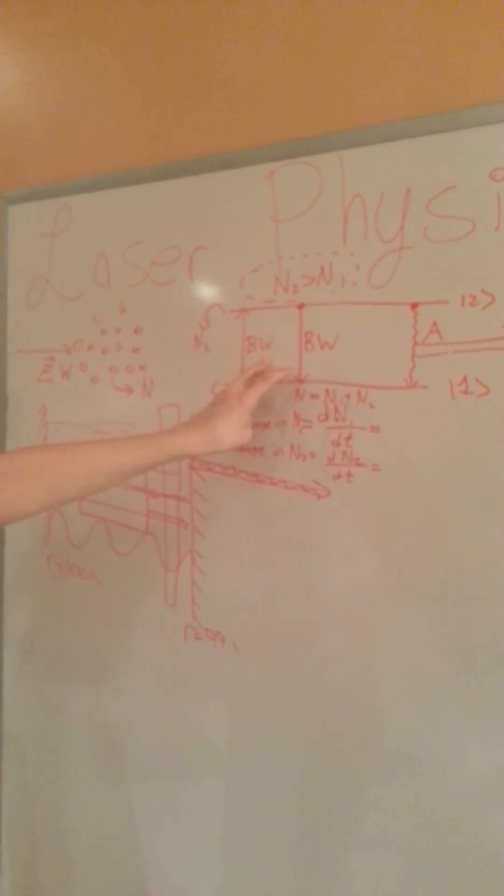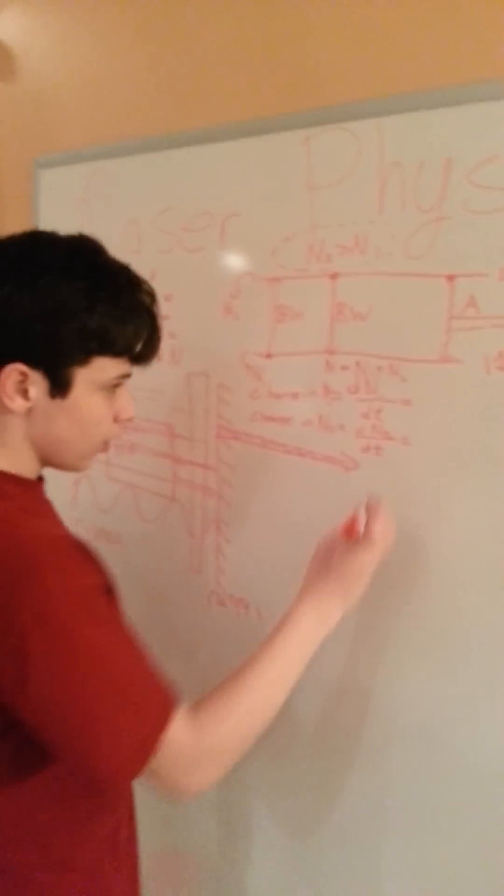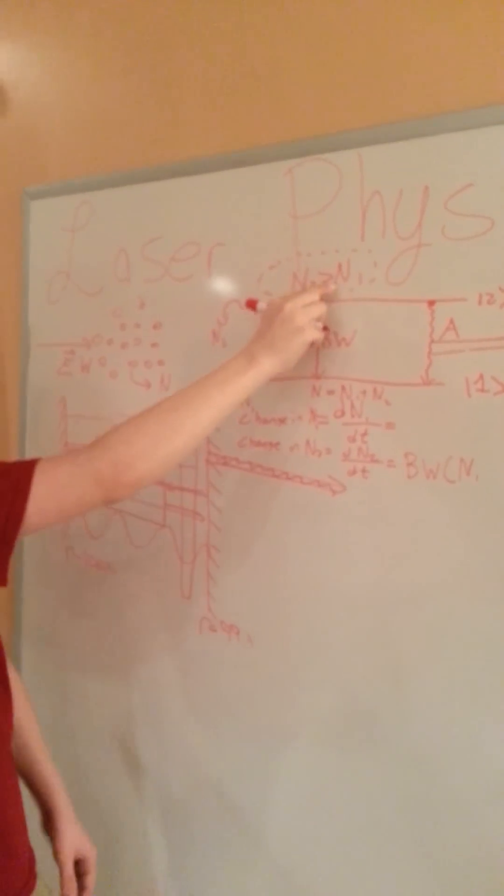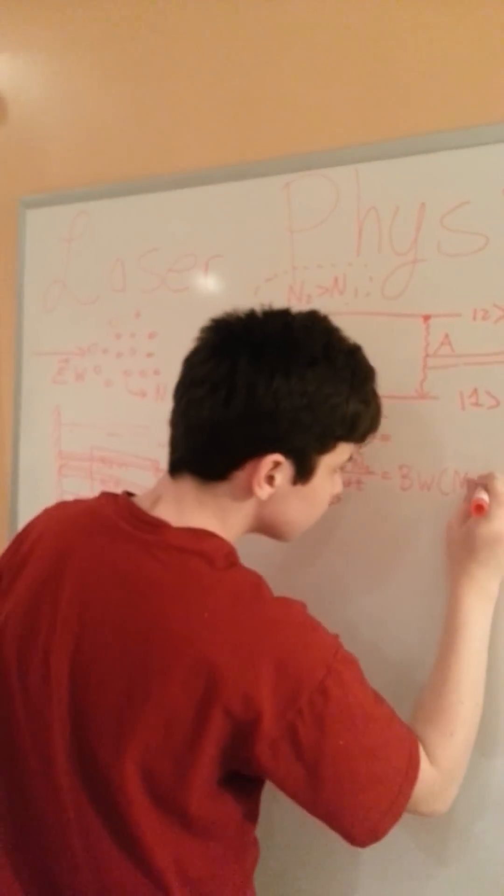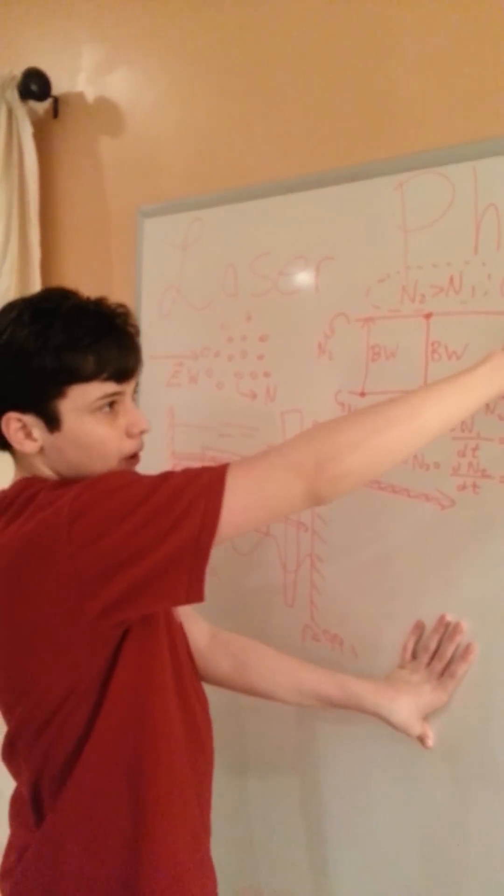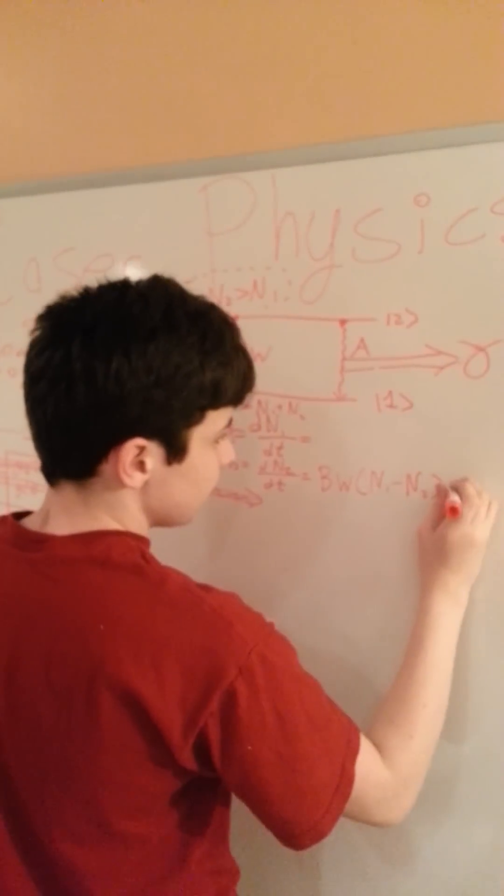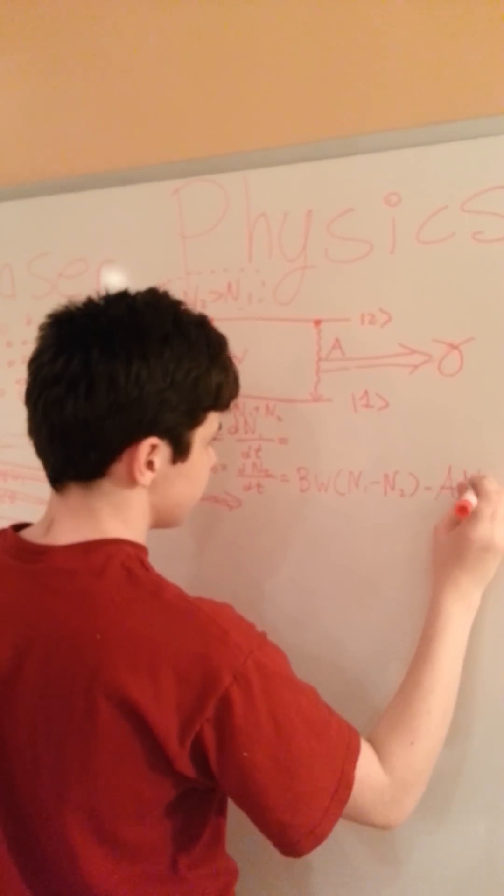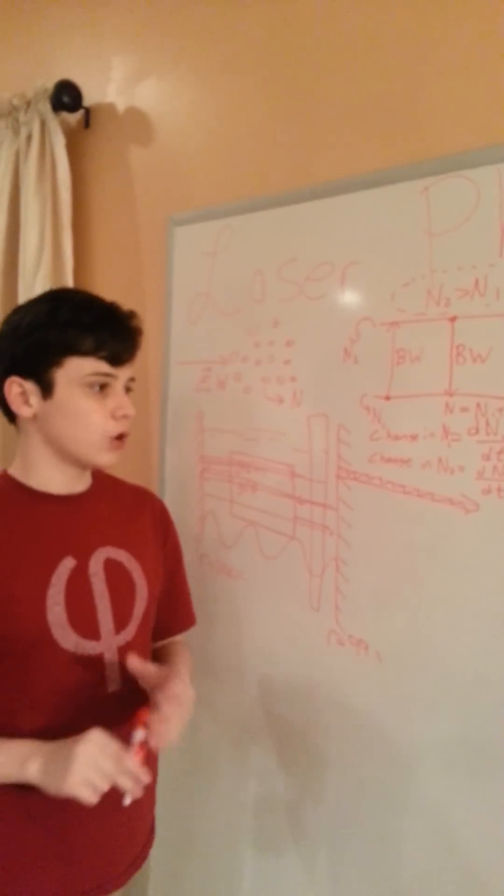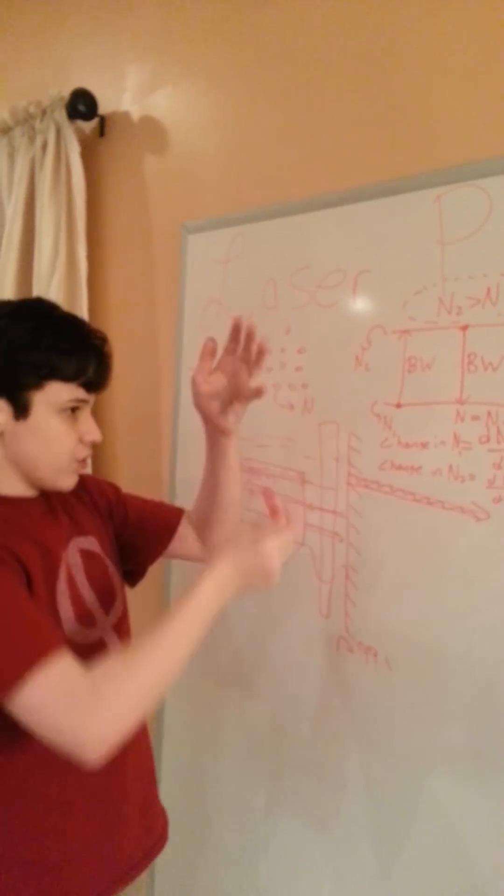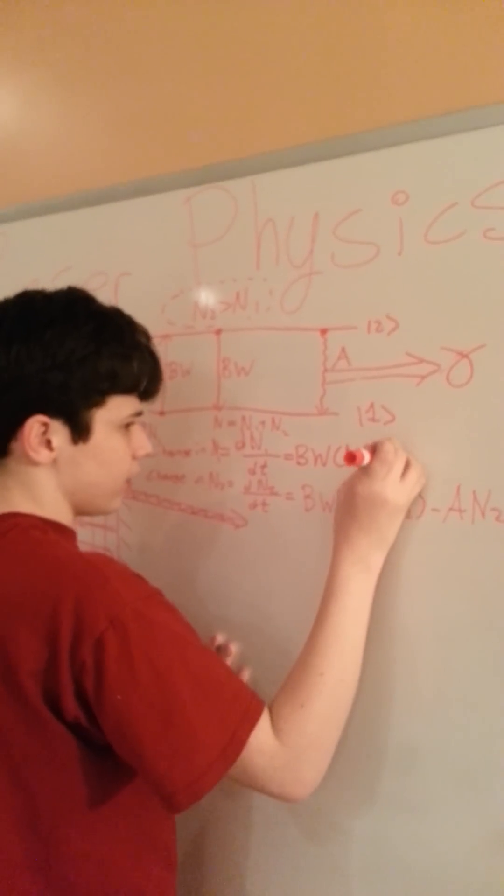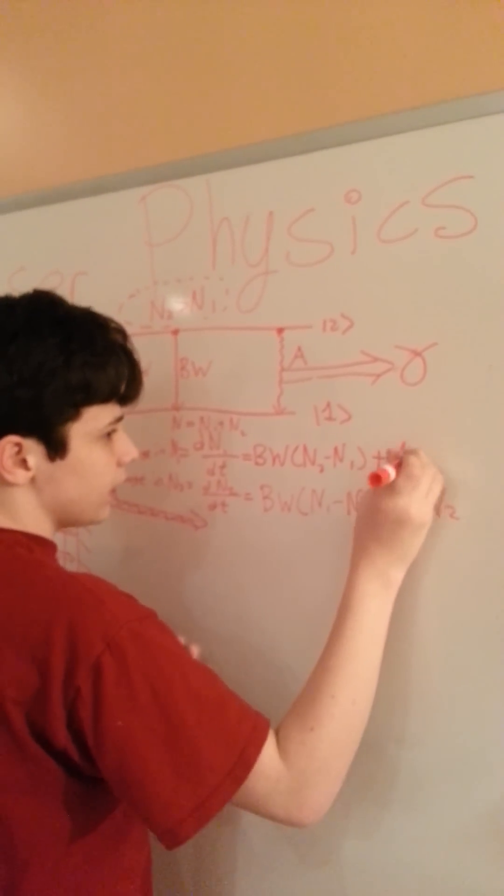For the change in N2, N2 is going to grow if there's a bunch of Ns here through this BW process. So this is going to be BWN1, and we're going to have to subtract BWN2 because the more atoms that are up here, the more they can push down. And also we have the spontaneous decay, minus AN2. This is called spontaneous, this is called stimulated. The DN1/DT is going to be exactly opposite. Just look at the picture upside down. The arrows reverse. So this is BWN2 minus BWN1 plus AN2.